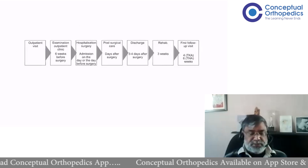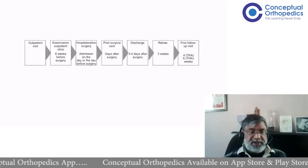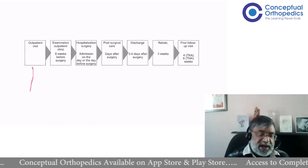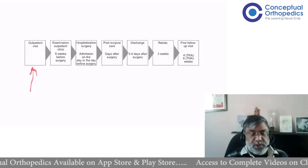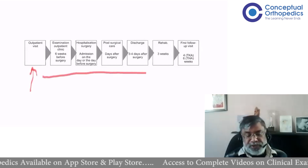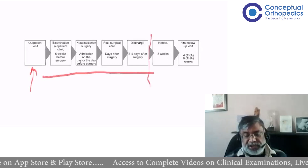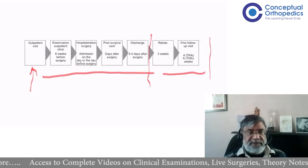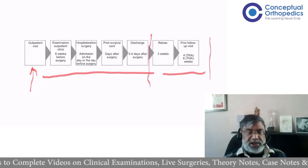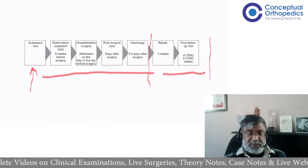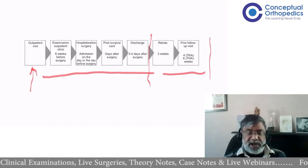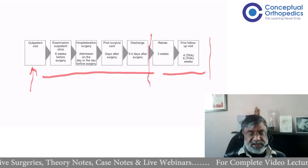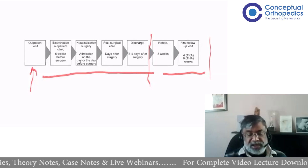How can we prevent this? A lot of people think prevention is only what we do in the theater or just before theater, but actually prevention starts from the time the patient has their first consultation with you and carries on even after the patient is discharged. Even five years down the line, if the patient gets pneumonia, you have to prevent periprosthetic infection by quickly treating it radically so that bacteria don't come and attach to the implant. Prevention is a long journey.